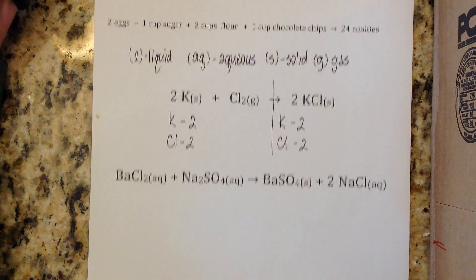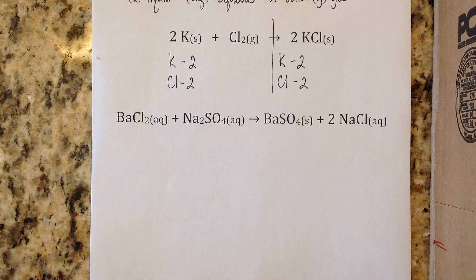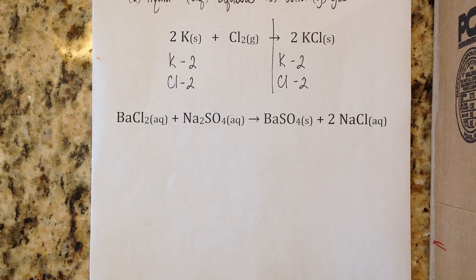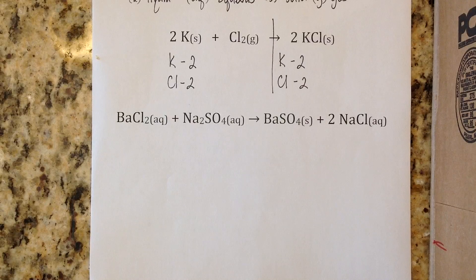For example, this is 2 moles of potassium plus 1 mole of chlorine gas yields 2 moles of potassium chloride. When you see these big scary looking things, just remember it's just a recipe and you're going to have all the skills to do all the things you need to do with that reaction.